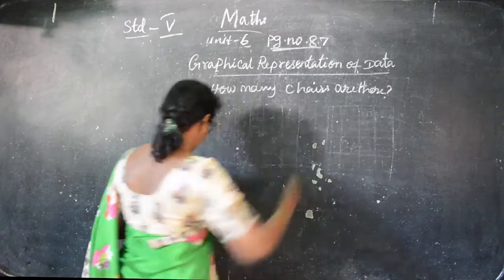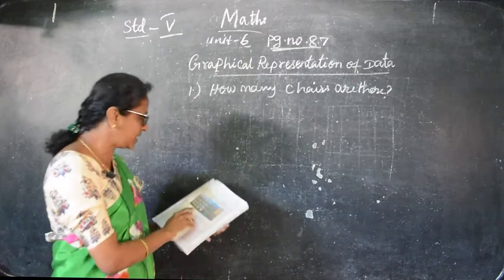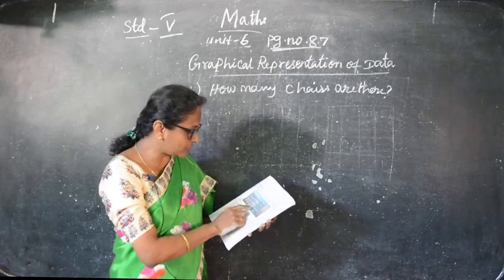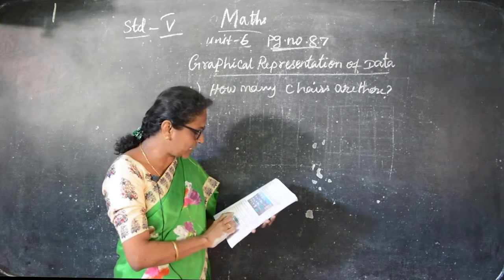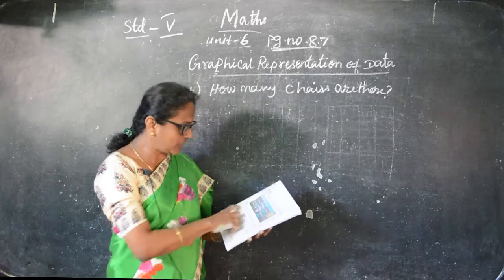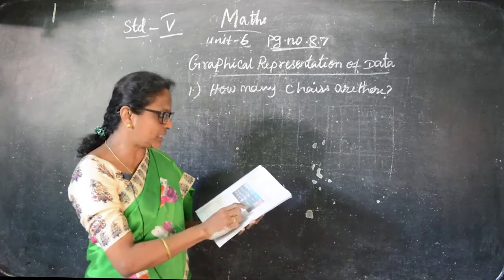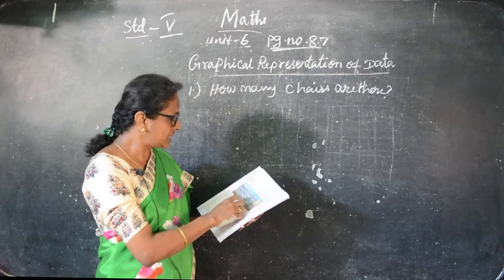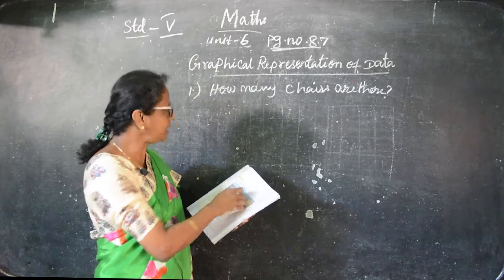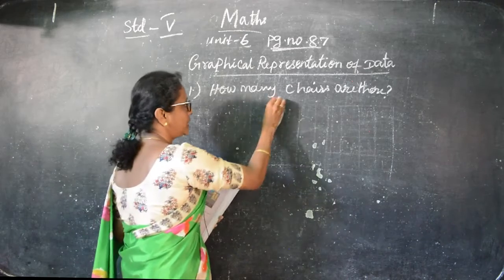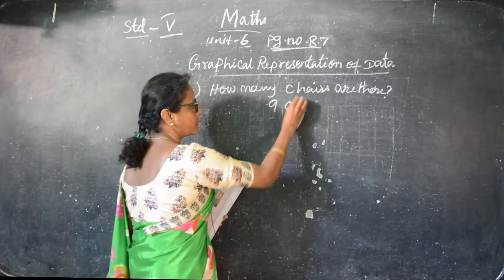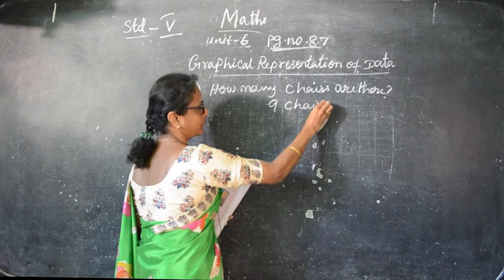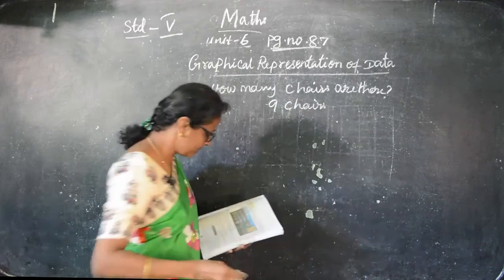There are foldable chairs and ordinary chairs. So you can count all the chairs: 1, 2, 3, 4, 5, 6, 7, 8, 9. So 9 chairs. Totally 9 chairs.